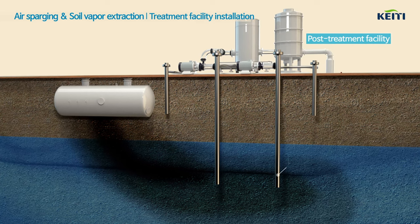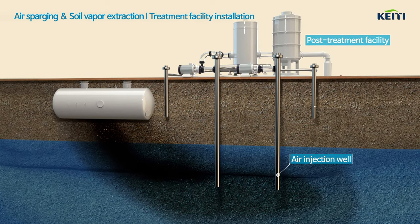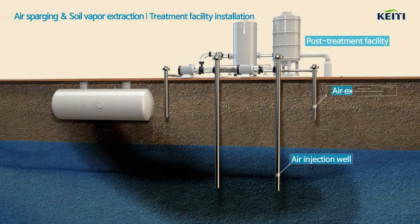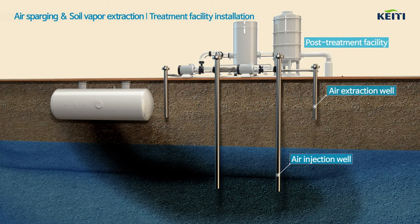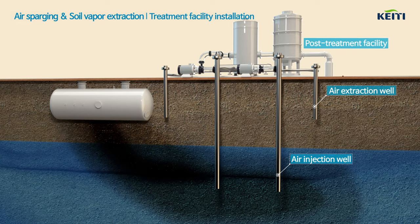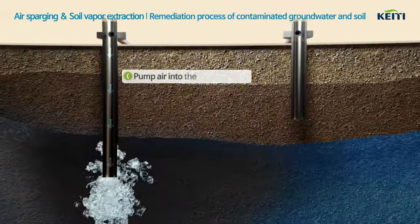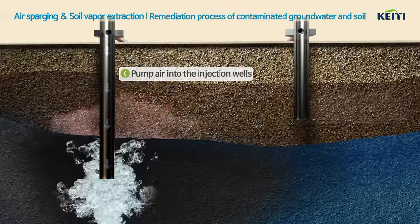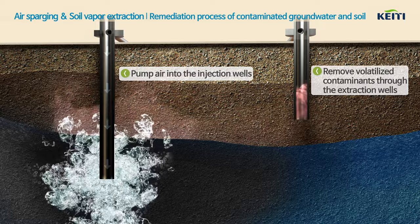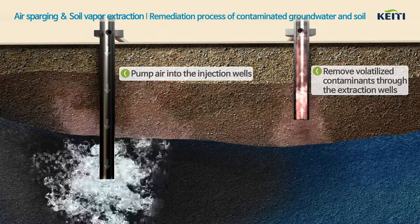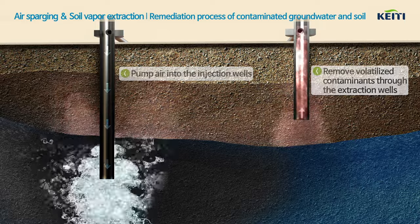Install air injection wells to pump air into the contaminated aquifer and extraction wells to extract the volatilized contaminants from the unsaturated zone. The air pumped into the injection wells volatilizes the contaminants in the groundwater upward into the soil above the water table.